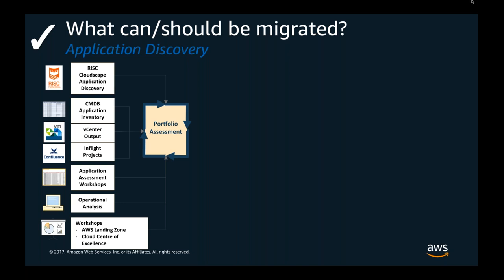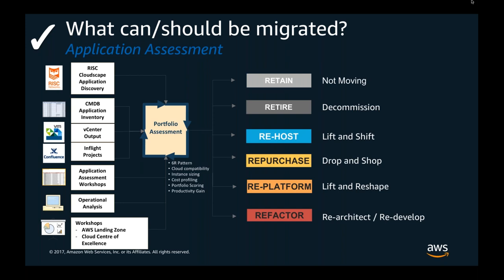Once we understand the current state, we move to understanding the future state through a mechanism called the Six R pattern, which we use with all our organisations globally. The six Rs are: retain, retire, re-host, re-purchase, re-platform, and re-factor. This helps determine what can be moved into the cloud and what cannot, working with your application owners and developers to understand each application and what it could look like in AWS.